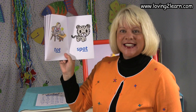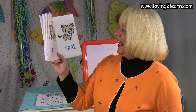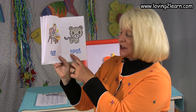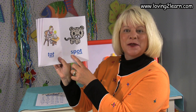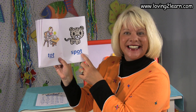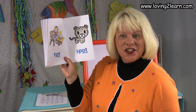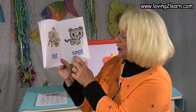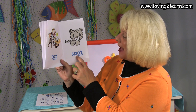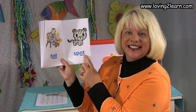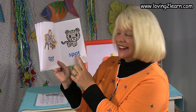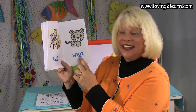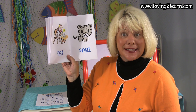Here we see a leopard who has a spot. Here's the word spot. Where do you see the Ought chunk in the word s-p-o-t? That's right, it's at the end, isn't it? She actually has a lot of spots, doesn't she?